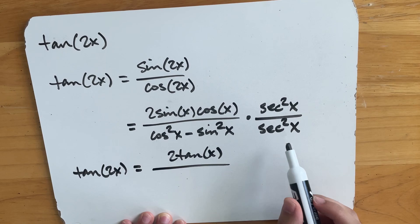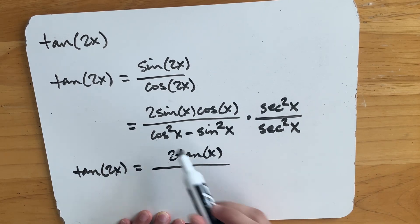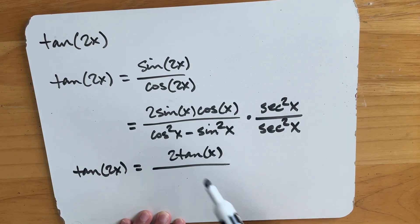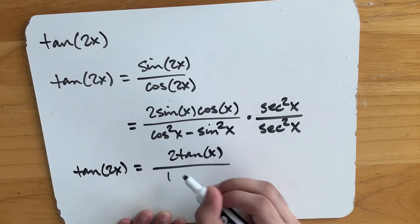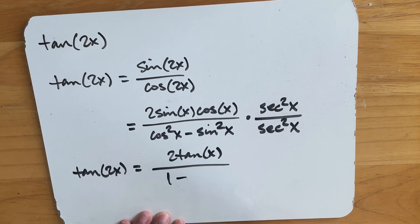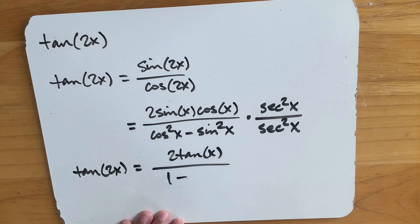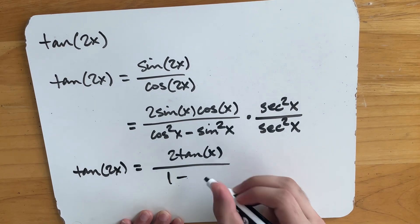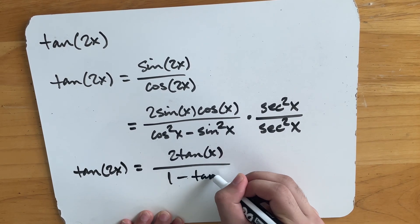And then, as I said, we distribute the secant squared x to both the cosine squared x and the sine squared x. Cosine squared x goes away, so we end up with 1 minus something. 1 minus sine squared x, so we get sine squared x over cosine squared x, that's just tan squared x. So we end up with 1 minus tan squared x.